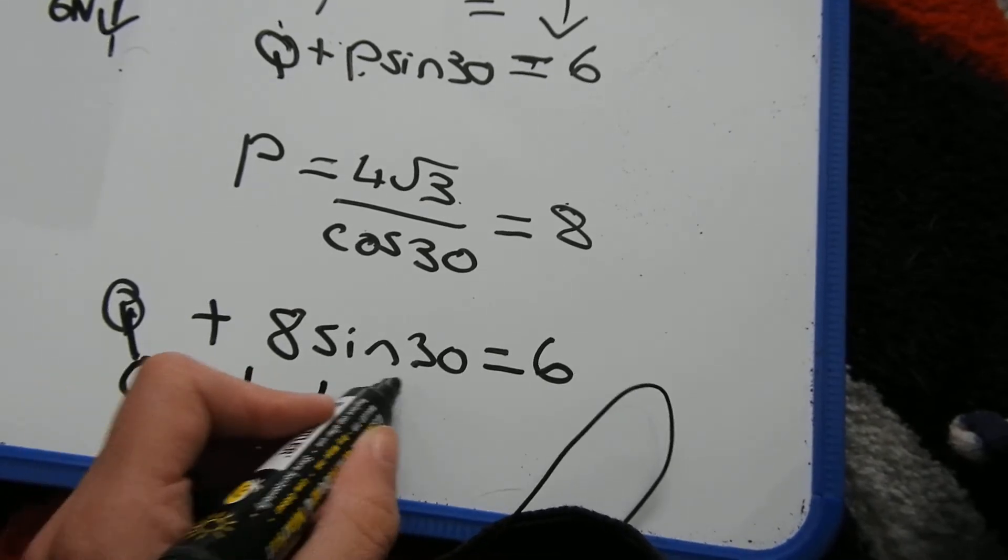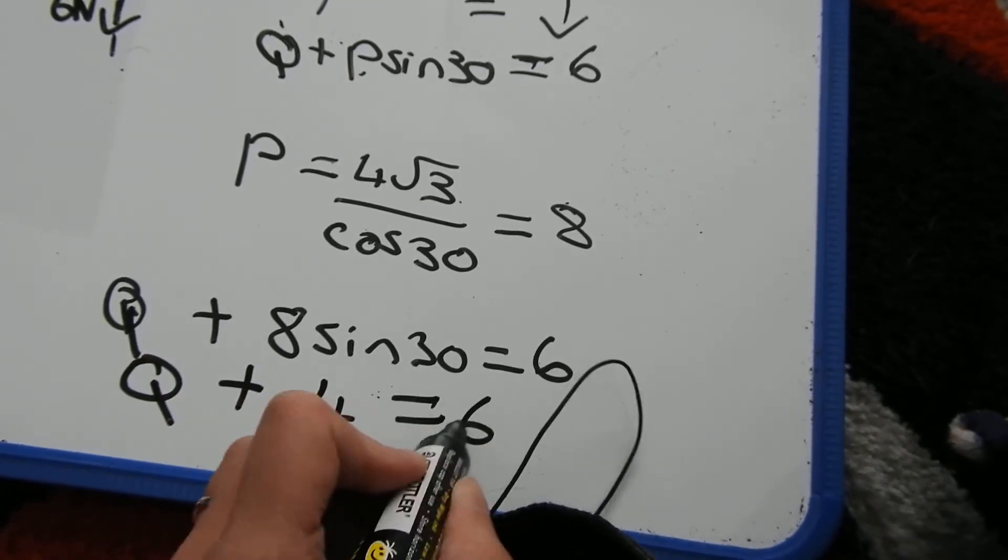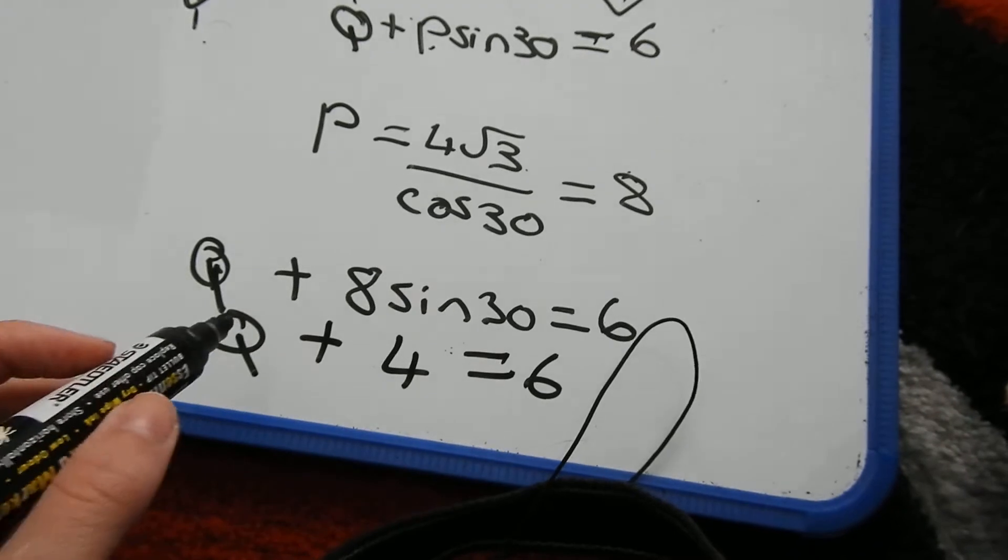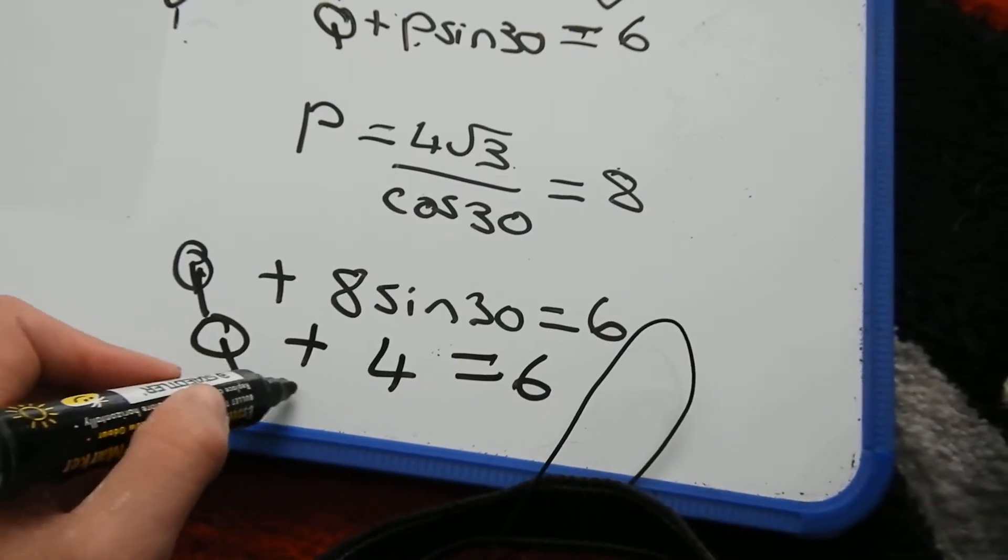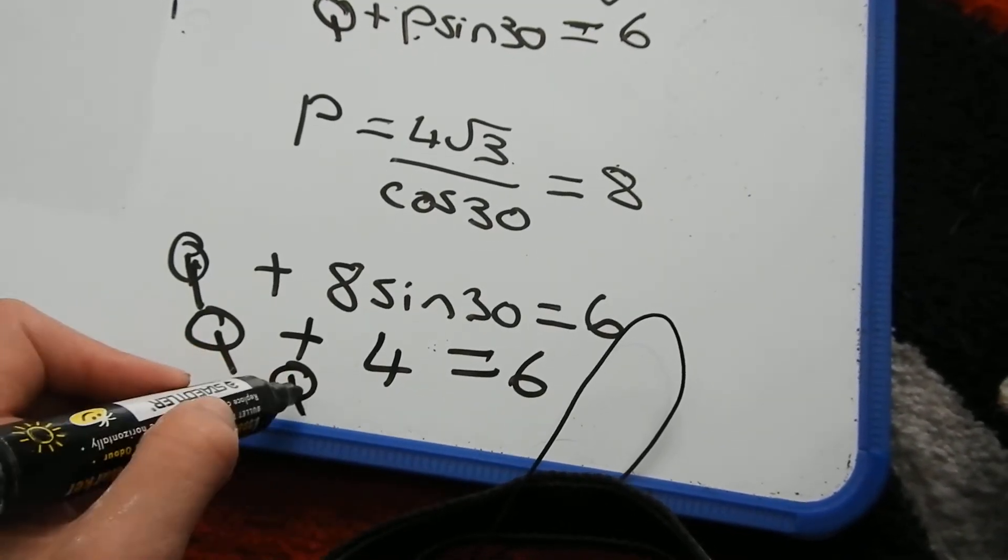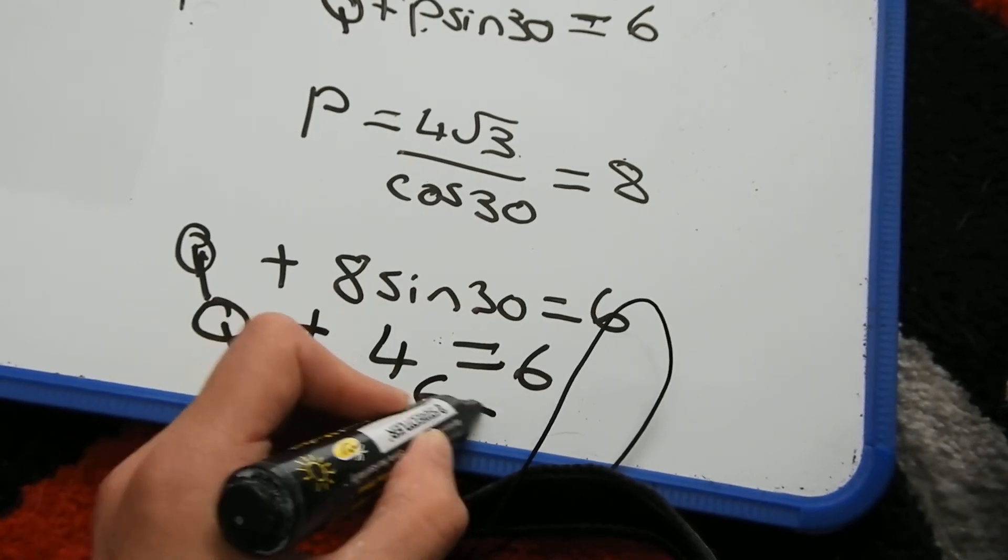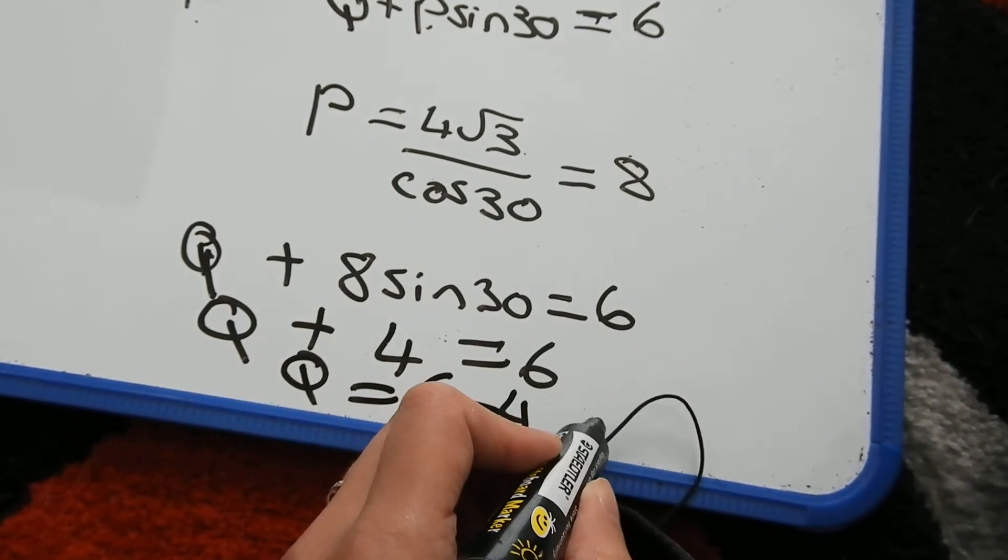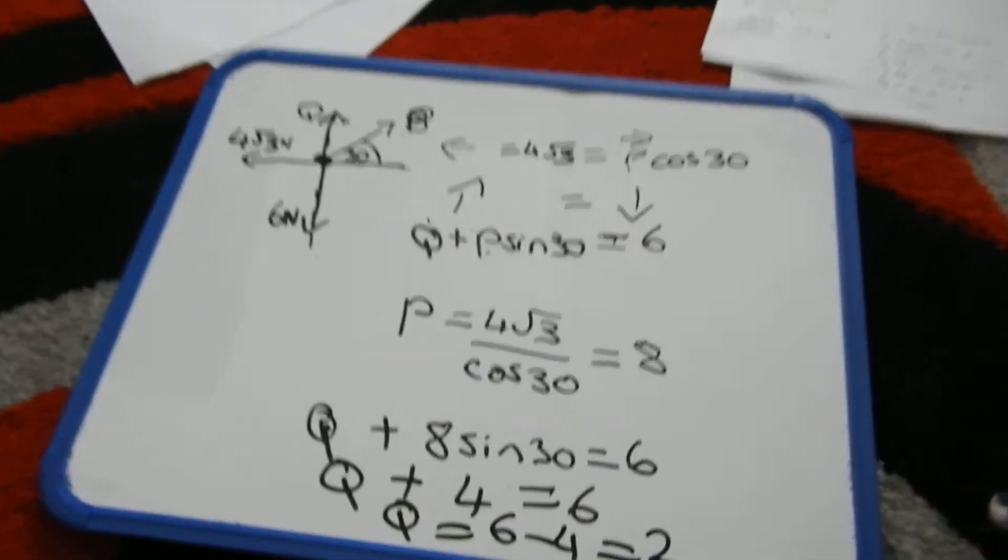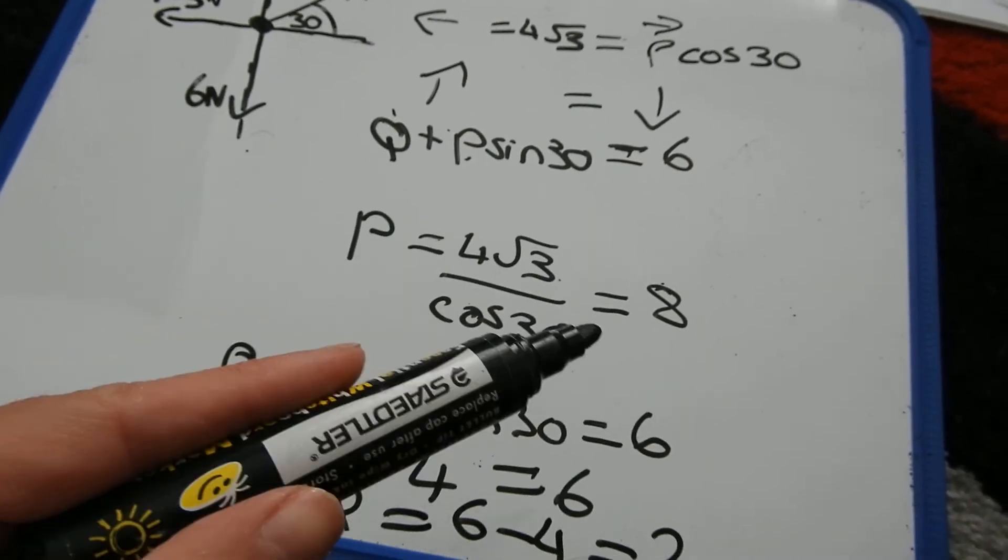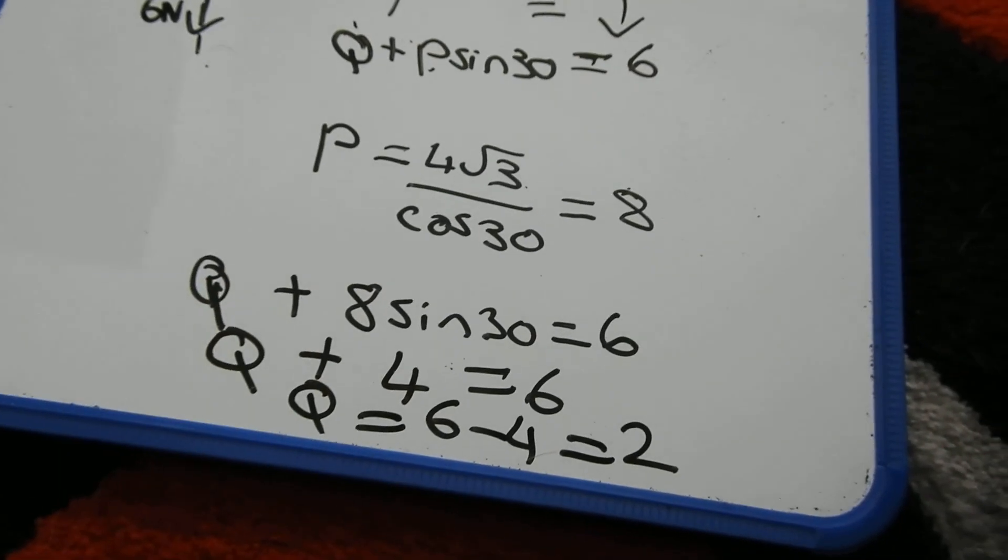is 4 because sin 30 is a half. So Q plus 4 is 6. So rearranging this in terms of Q, Q is equal to 6, take away 4, which is equal to 2. So your answers are P is 8 and Q is 2.